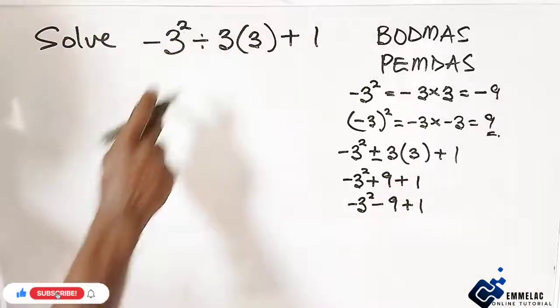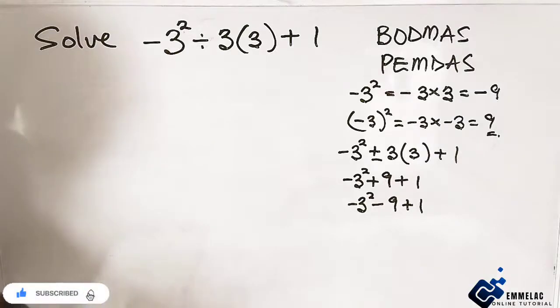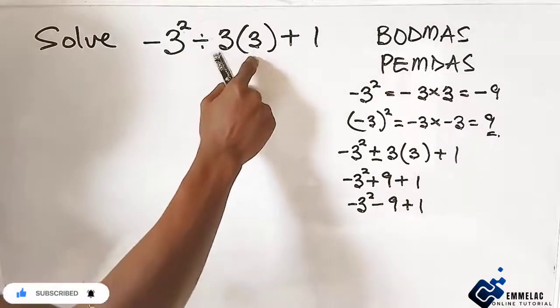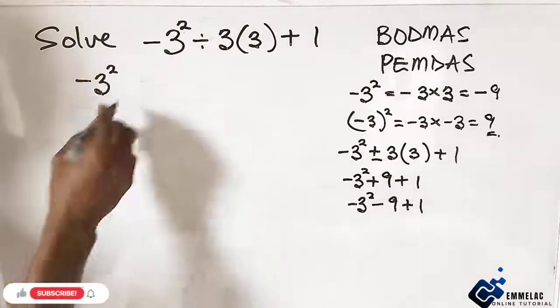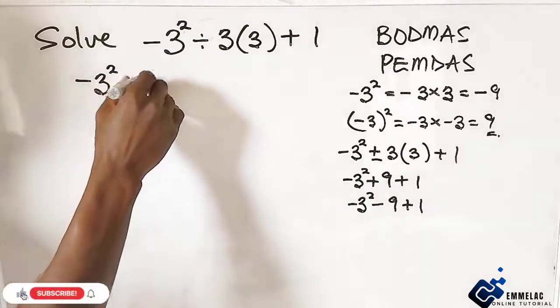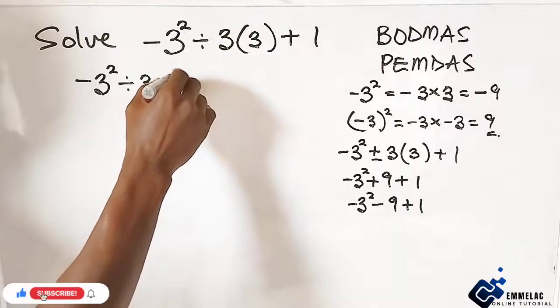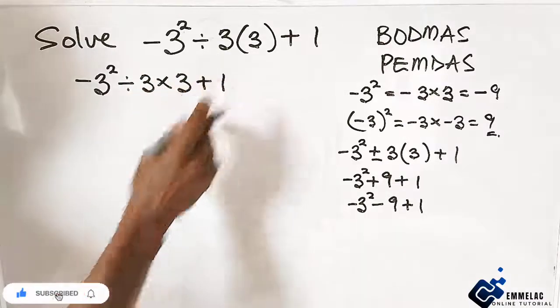But in this case, for the fact that you have a divisional sign, you cannot multiply this. Now what do we do? -3 raised to the power of 2, now divided by 3, now times 3 + 1. Right?